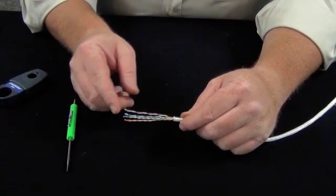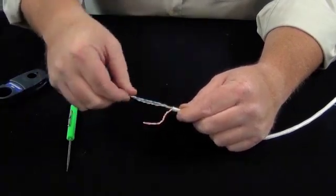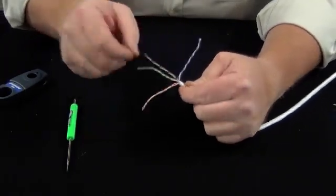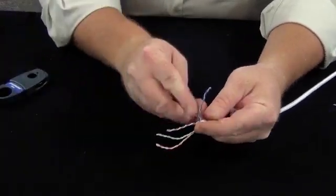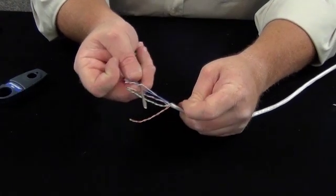Next, you'll want to separate and straighten each of the pairs inside the cable. Start by flaring each of the cables out, give them a slight twist backwards, and then using a screwdriver, you can insert the screwdriver between the pairs and just pull the pair straight.